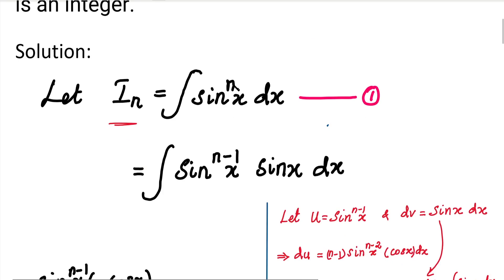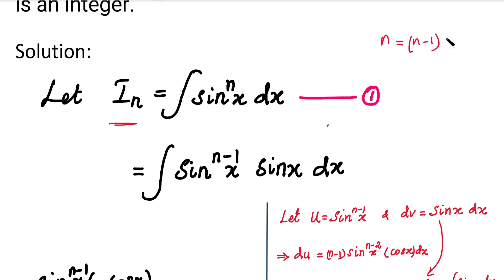Next, we will write sin^n(x). We will split it as sin^(n-1)(x) into sin(x). That is, n = (n-1) + 1.